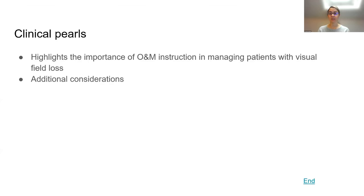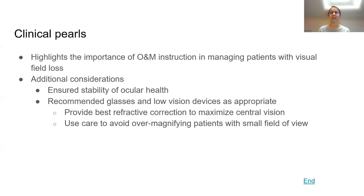This case highlights the importance of orientation and mobility instruction for patients with field loss and maintaining that level of performance throughout the lifespan. This patient, who has probably used a cane since childhood, is at almost 50 years old still learning new strategies — demonstrating that orientation and mobility training is not always a one-time occurrence but sometimes needs to be refreshed over time. We also ensured stability of ocular health and recommended glasses and low vision devices, being careful not to over-magnify in patients with limited fields.